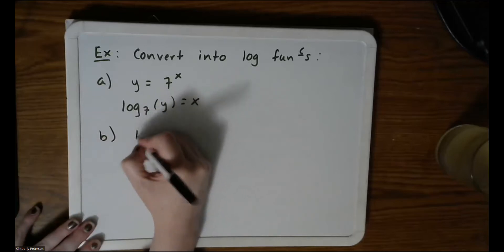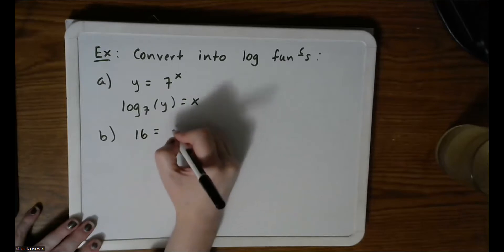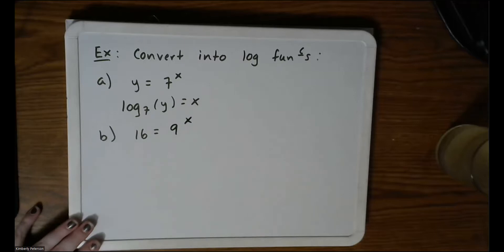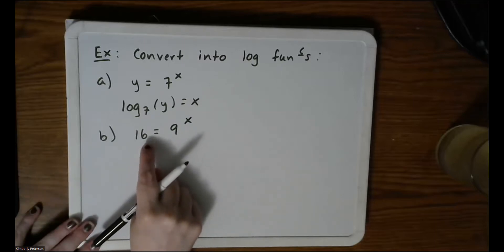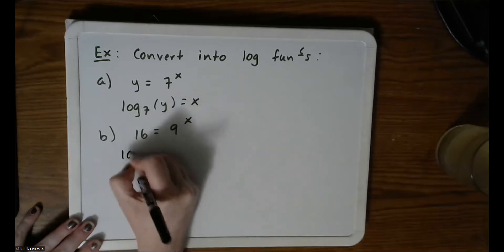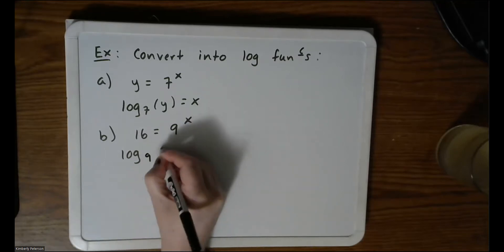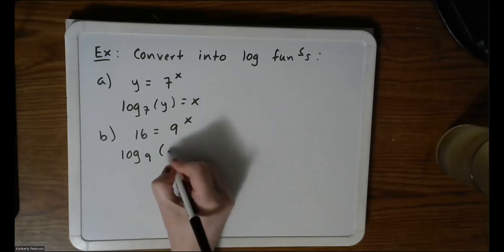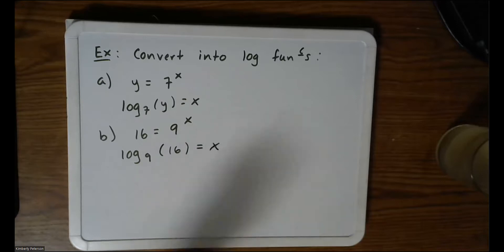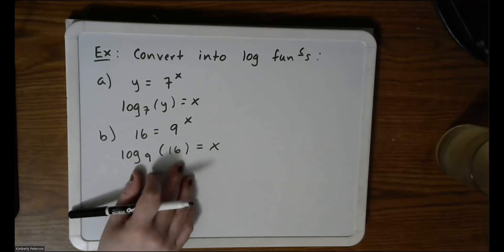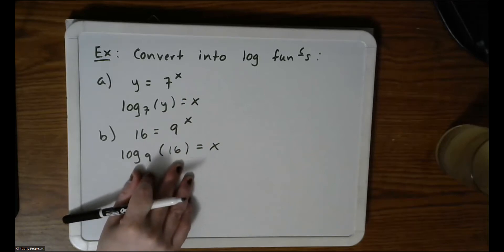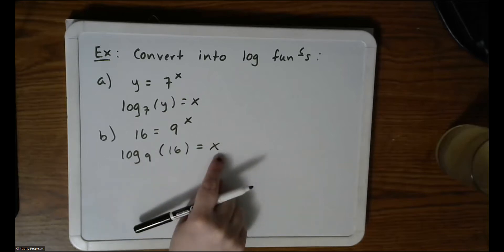Let's say 16 equals 9 to the x — now I'm actually giving this an output. If I write log, I need a base. Can somebody tell me what the base should be? Exactly, it should be 9. Then my input is 16, and that equals x. Towards the end of today's lecture, I'll discuss how we can physically calculate this using your calculator or a specific formula.